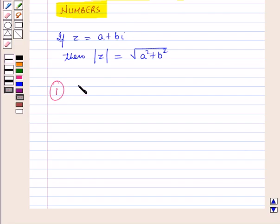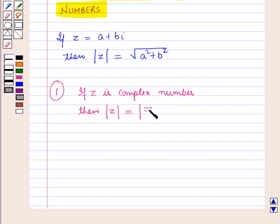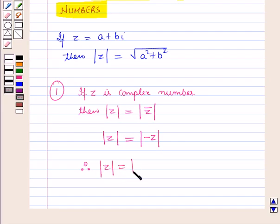Now let us discuss the first property of the modulus of complex numbers: the modulus of a complex number and the modulus of its conjugate are equal. That is, if z is a complex number, then modulus of z is equal to the modulus of conjugate of z. Also, the modulus of the negative of a complex number is equal to the modulus of that complex number. Therefore, modulus of z is equal to modulus of conjugate of z is equal to modulus of negative z.